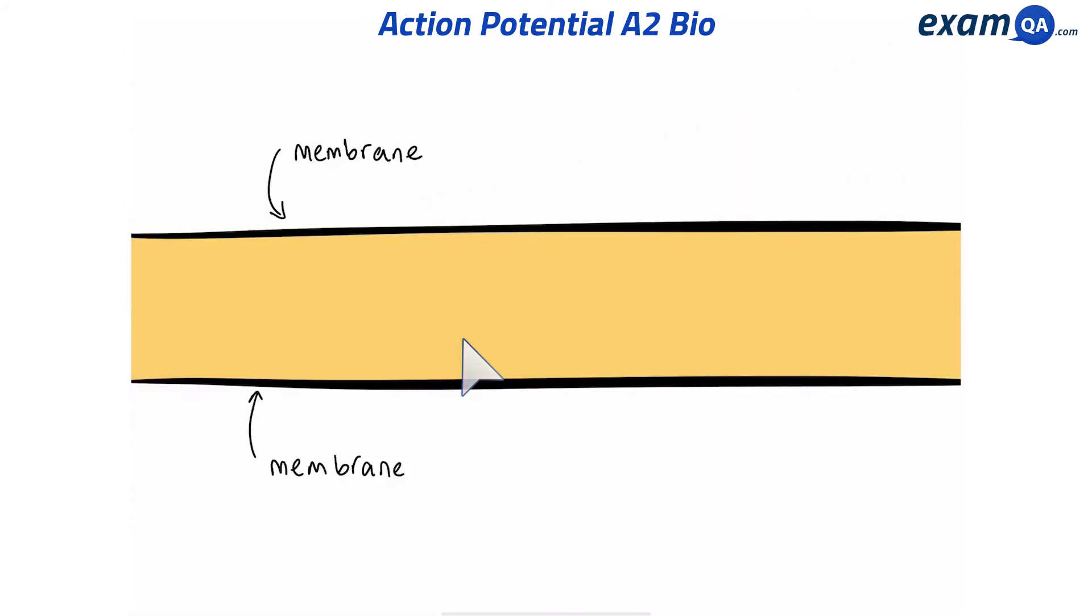Okay, so this is a cell membrane. That means this must be inside the neuron, and this area is outside the neuron. Now, on the membrane, we have a sodium-potassium pump.